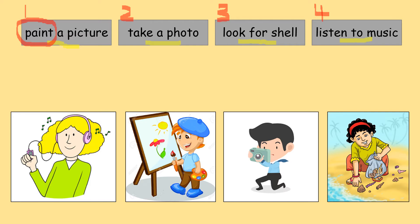Number two, take a photo. The verb is take — mengambil. Take a photo, mengambil gambar. Number three, look for shell. Look is not melihat; here look for means mencari — mencari shell. Do you know what is shell? Kulit-kulit kerang, kulit-kulit siput. That is shell — cengkerang, siput, kerang.